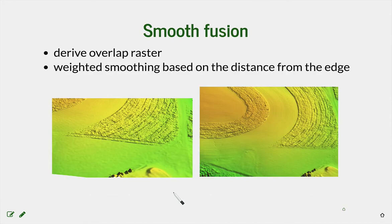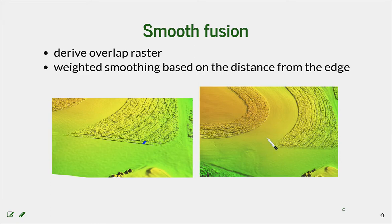We can employ smooth fusion, which uses weighted smoothing based on the distance from the edge. Where previously we averaged data in the overlap with the same weight, when we use this weighted smoothing, the edge between the two digital elevation models becomes so smooth that it is practically invisible, particularly visible in the background area.